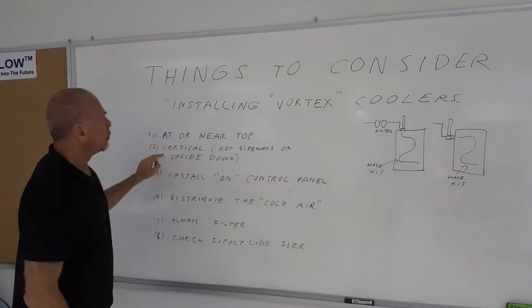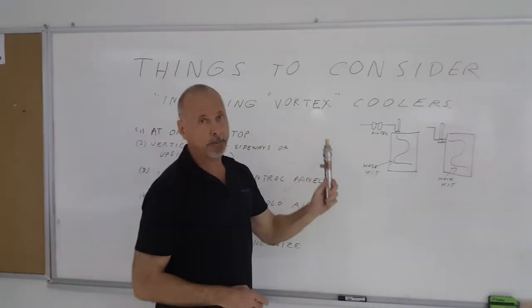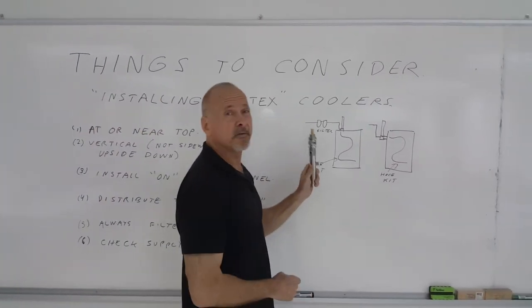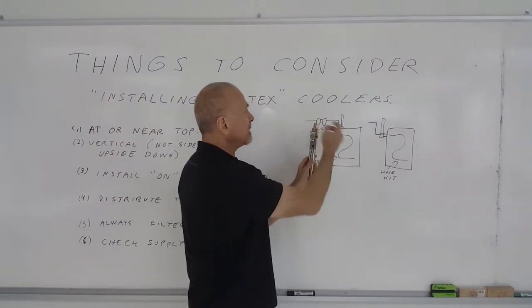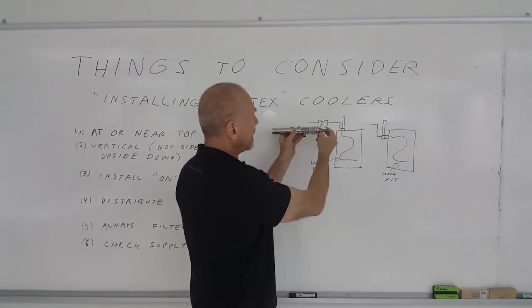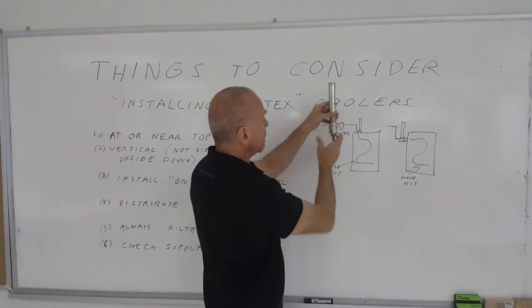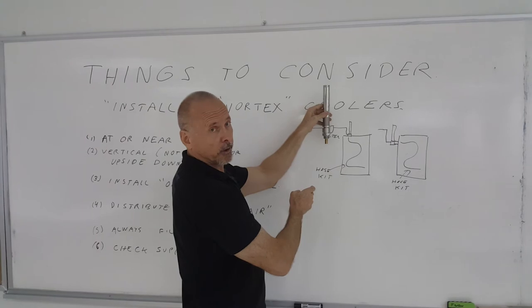Secondly, you want it mounted vertical. You do not want to mount it sideways. You don't want to mount it upside down. Again, for the very reason you want to have that vent to be able to push that hot air out. Mounting it sideways, it's not going to work as well, certainly not very well upside down. So you want it mounted vertical, or at least near vertical.